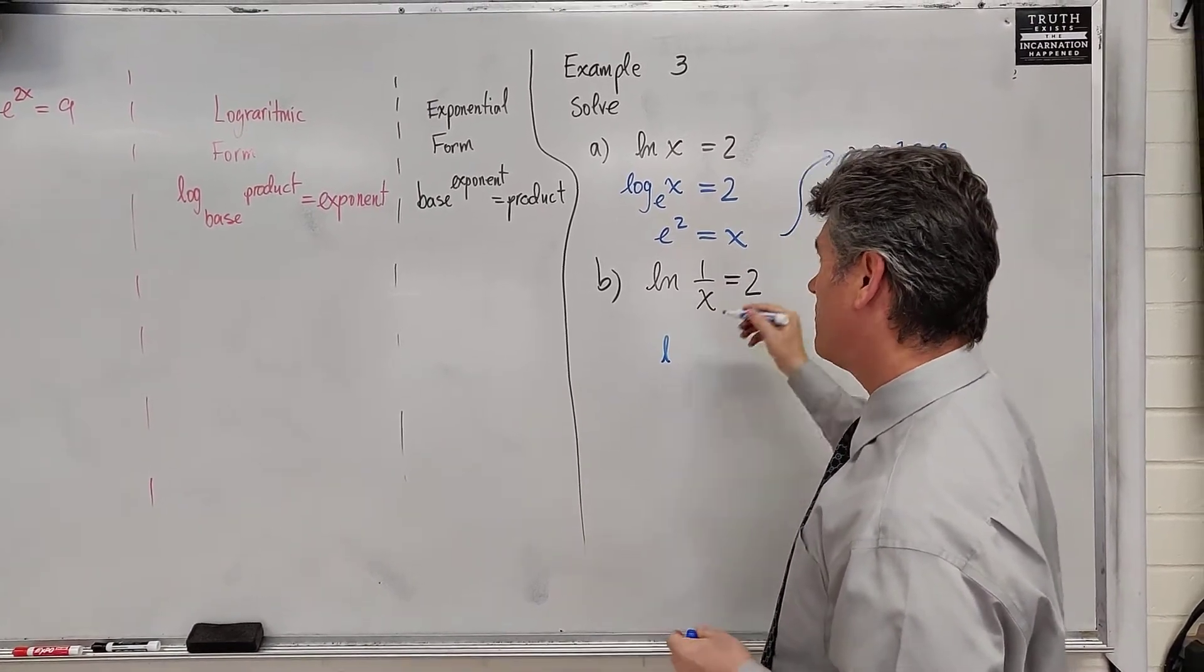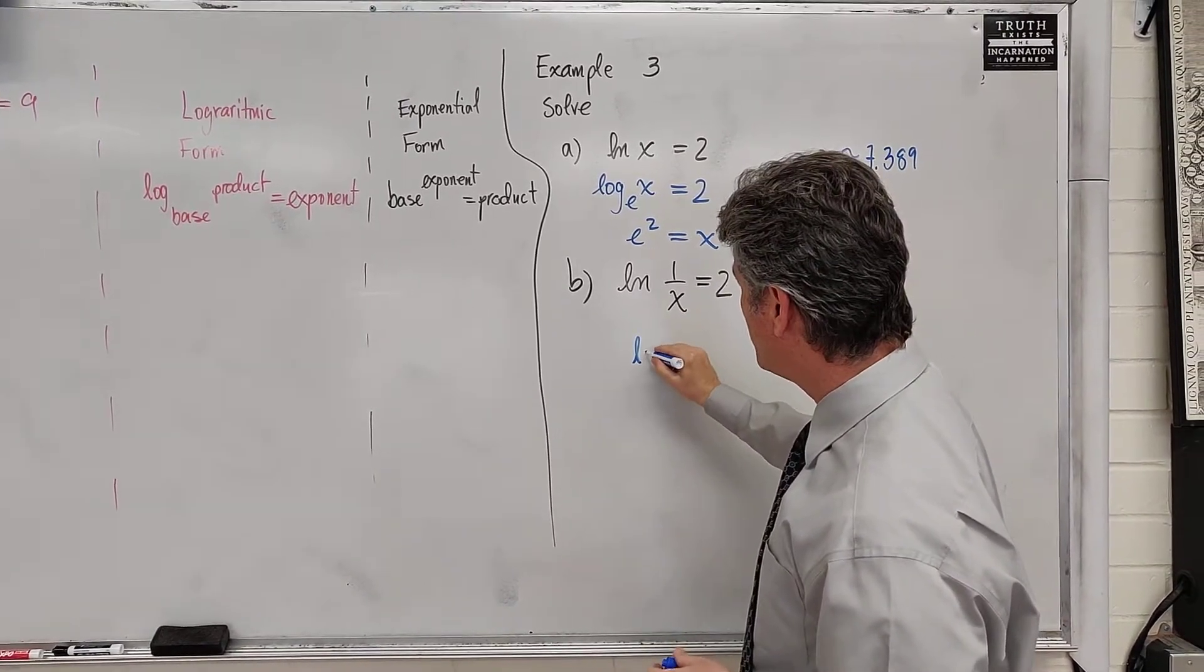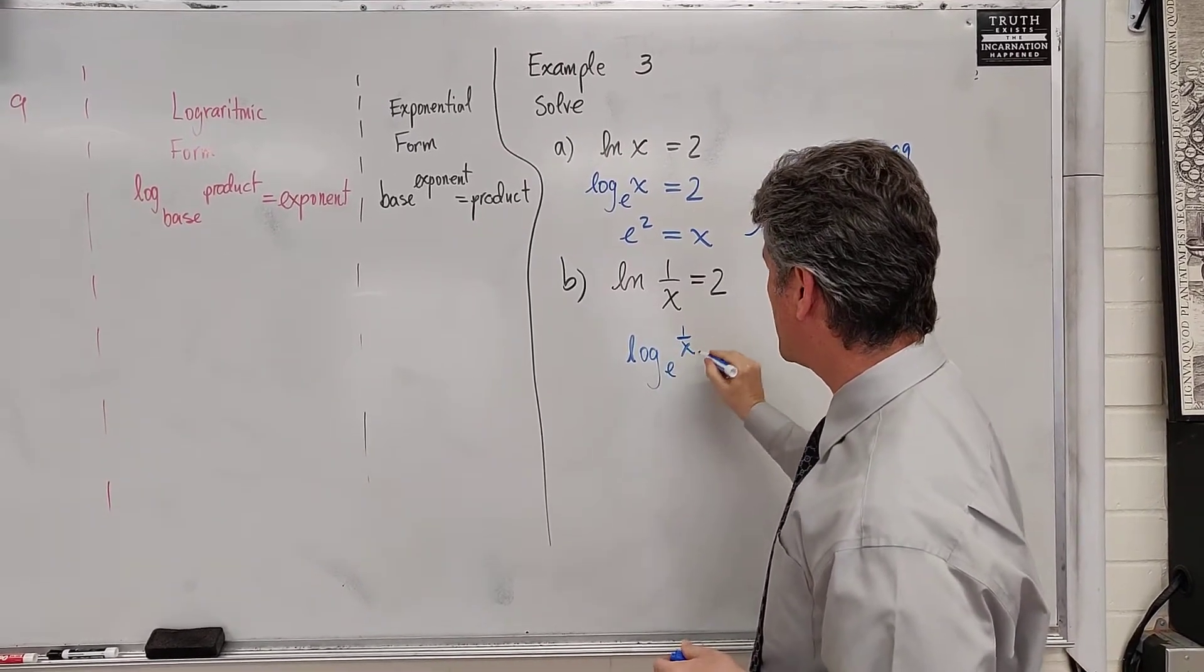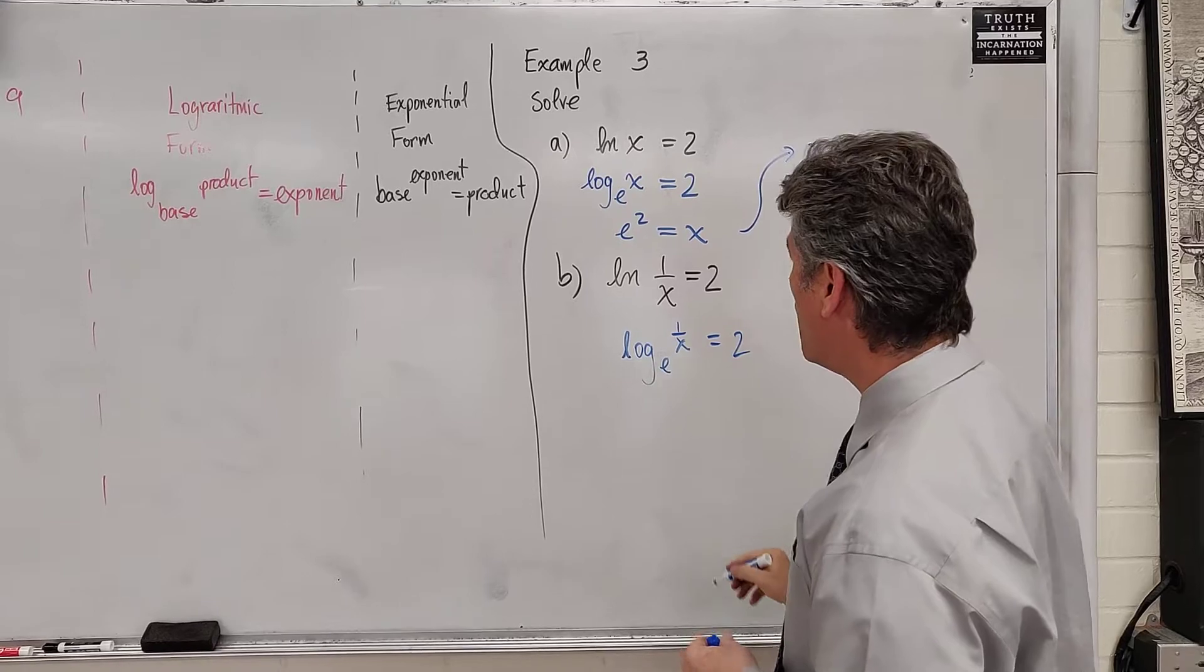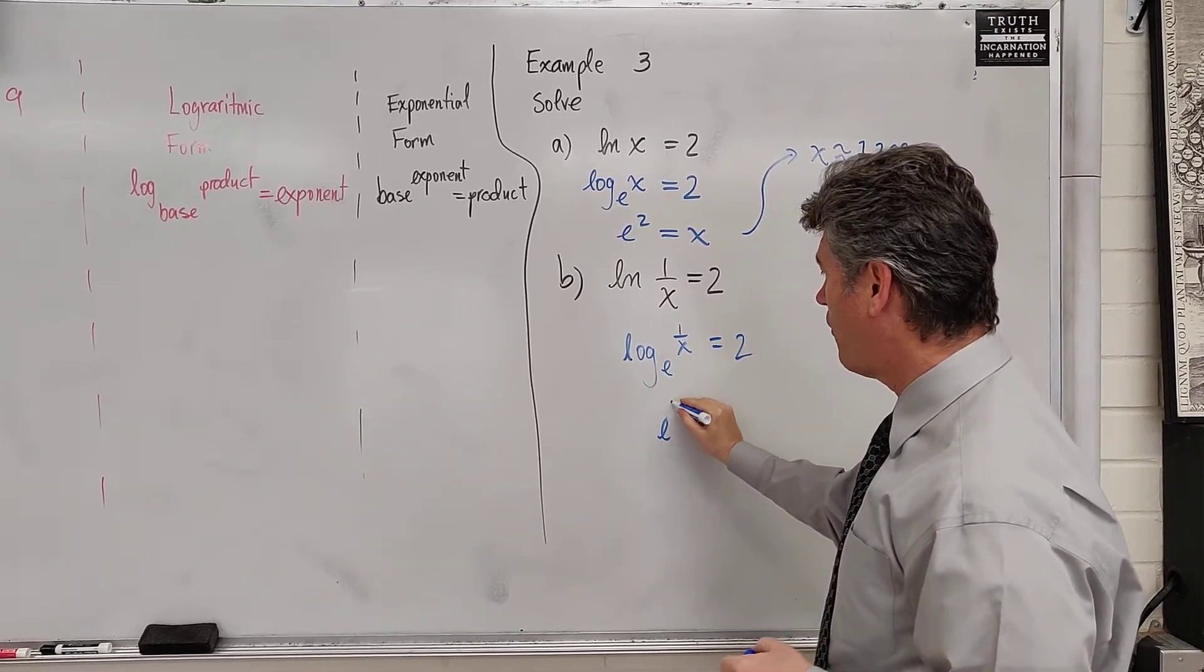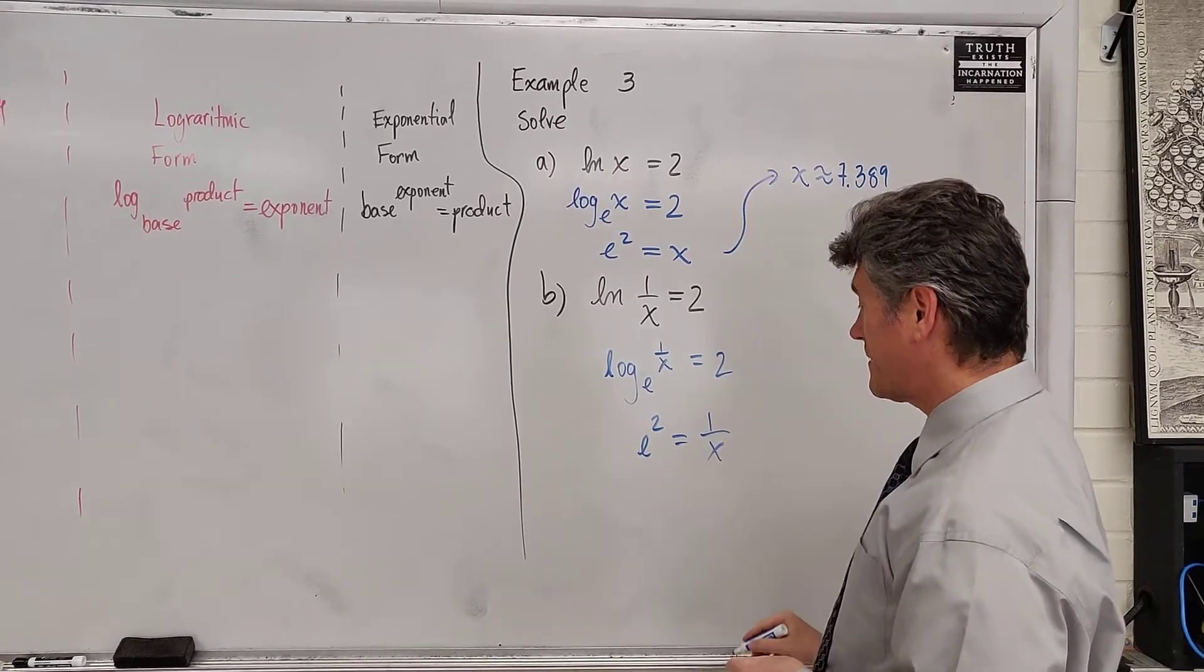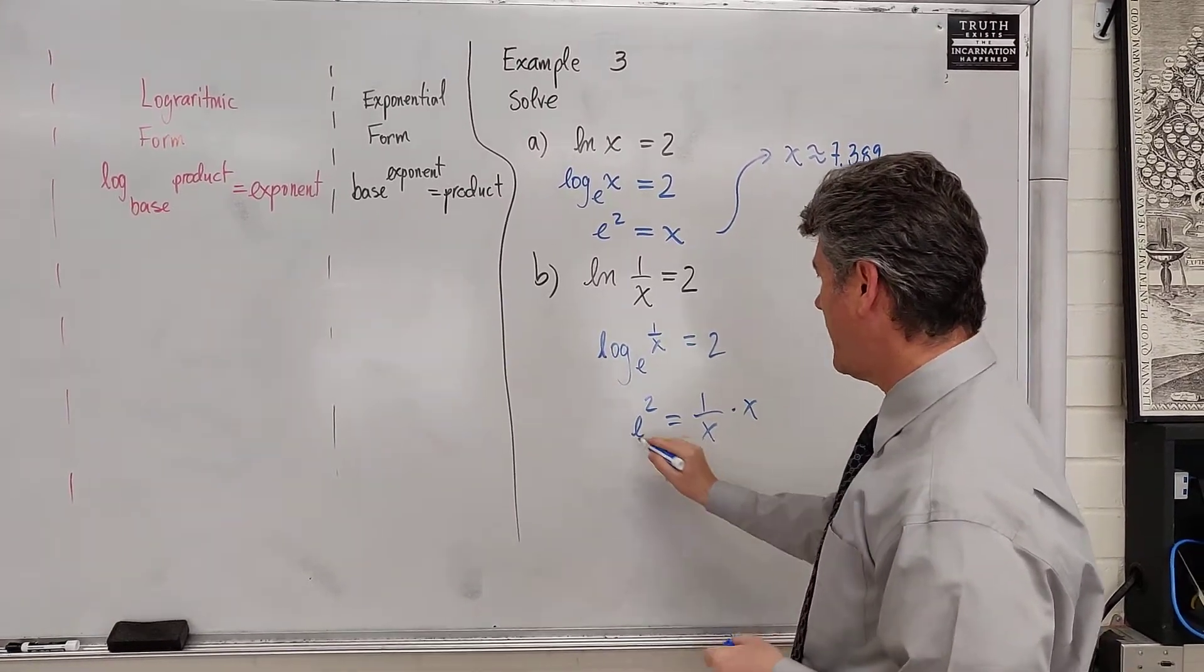This is log of 1 over x for base of e is equal to 2. Rewrite in exponential form. e squared is equal to 1 over x. Multiply on both sides by x.